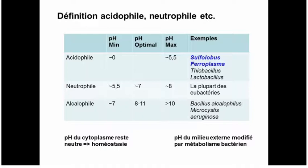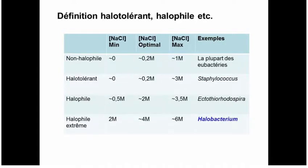Under acid stress, gram-negatives like E. coli produce chaperone proteins to prevent protein precipitation due to changes in surface charge. For extreme alkalophiles, they can export sodium and import protons to maintain the cytosol pH closer to neutral than the external environment.